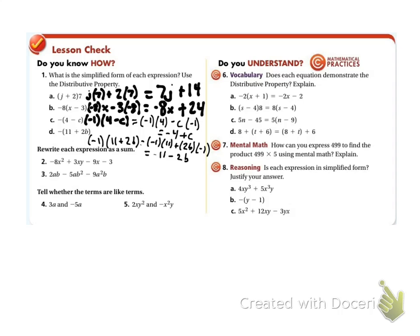Rewrite each expression as a sum by changing subtraction into addition. So that becomes plus negative 9x and plus negative 3. You could also pull the negative out front, changing the signs: 2AB becomes negative 2AB, and then the remaining terms become positive with a minus sign pulled out front — giving negative(2AB minus AB squared minus 9A squared). You can go back and double check that.